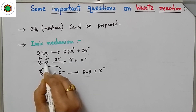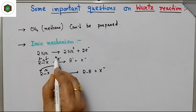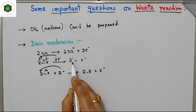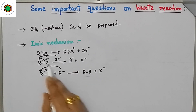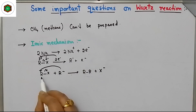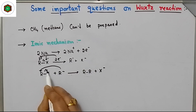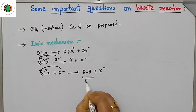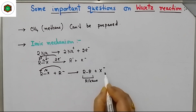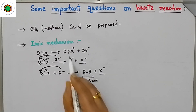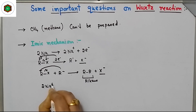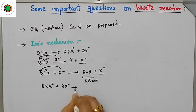This bond will break and these two electrons will go to carbon, making it negatively charged — a carbanion — and X⁻ is released. Then unreacted R-X has its bond cleaved, and R⁻ attacks to form a carbon-carbon bond, giving alkane by removal of X⁻. The two X⁻ ions then react with the two Na⁺ to form NaX.